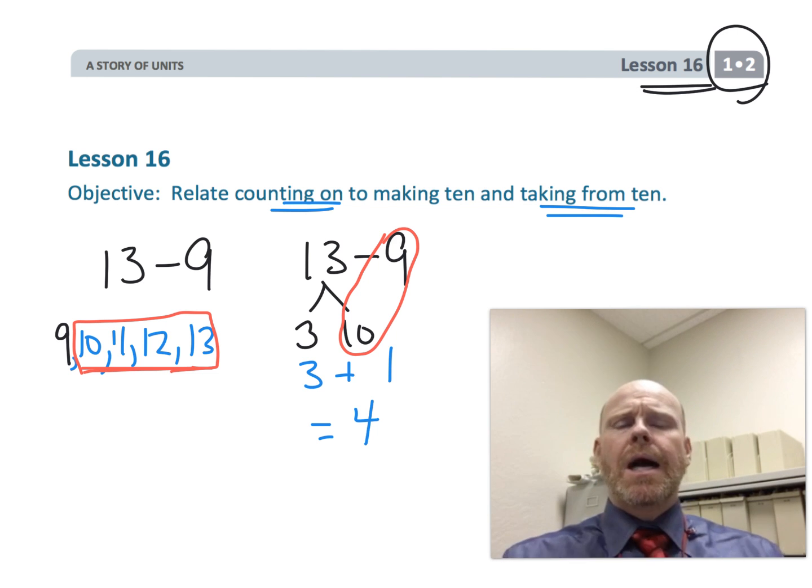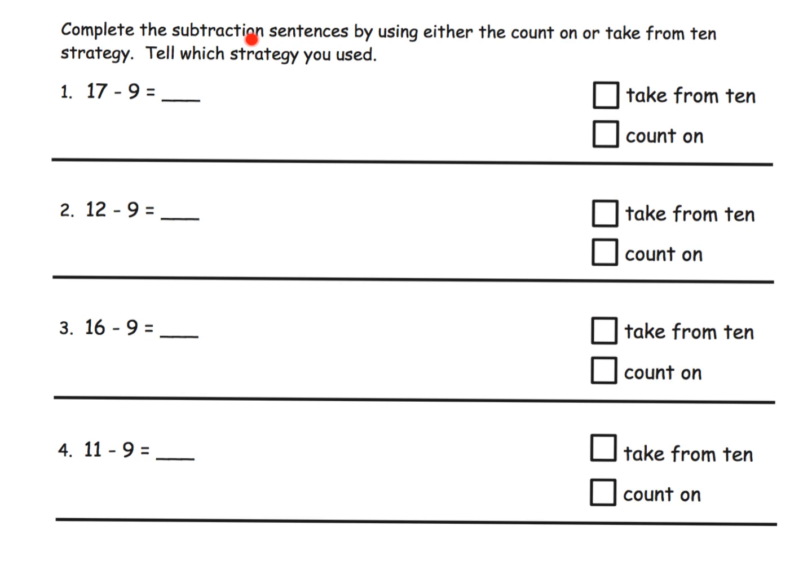Let's get going. The directions say complete the subtraction sentences by using either the count on or the take from 10 method, and then tell which strategy you used. Now parents and teachers, the big thing about this is whatever method they choose, there is no right answer or wrong answer. There is no preferred strategy for any given problem at this moment.